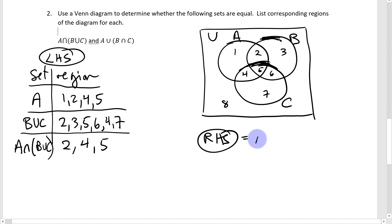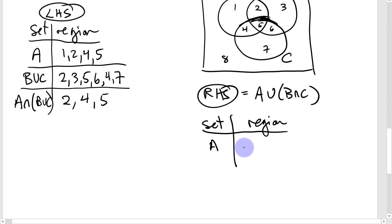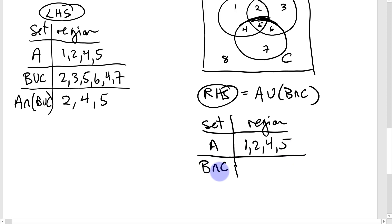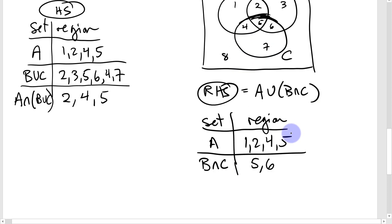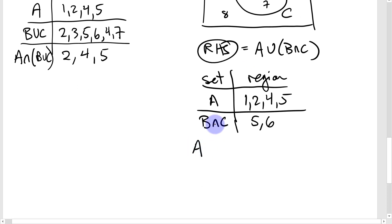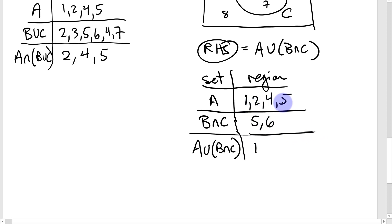The right-hand side is (A∪B)∩C. A is regions 1, 2, 4, 5 as before. B∩C — elements in both B and C simultaneously — gives regions 5 and 6. Taking the union of A with B∩C gives the right-hand side: regions 1, 2, 4, 5, and 6.